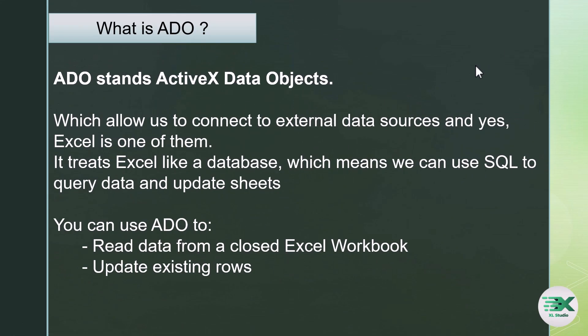Now let's talk about what ADO is. ADO stands for ActiveX Data Objects, which allow us to connect to external data sources — and yes, Excel is one of them. It treats Excel like a database, which means we can use SQL to query the data and update the sheets. You can use ADO to read data from a closed Excel workbook and also to update any existing rows.